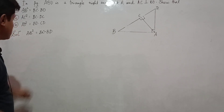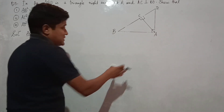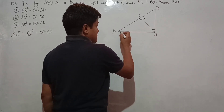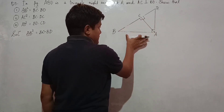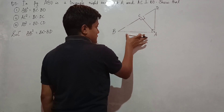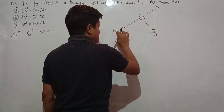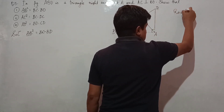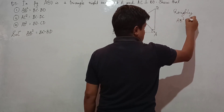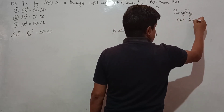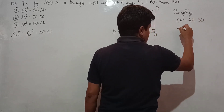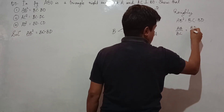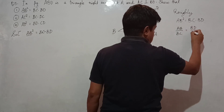To prove AB², we need two triangles that involve AB. The triangles are ACB and ABD. So AB² = BC·BD means AB divided by BC equals BD divided by AB.